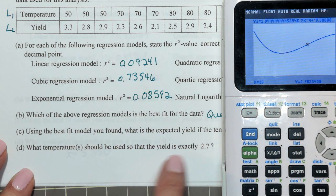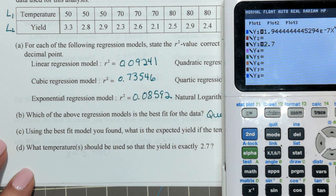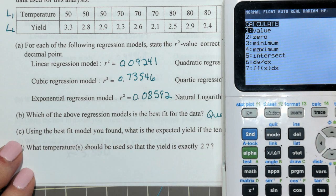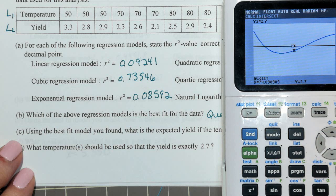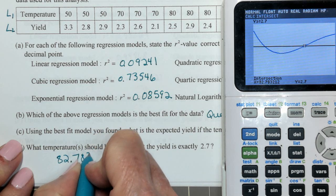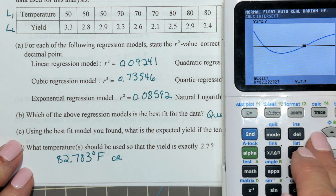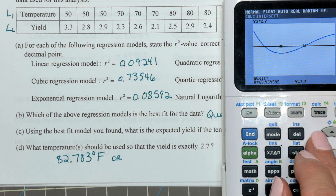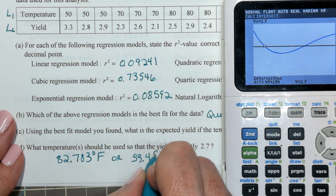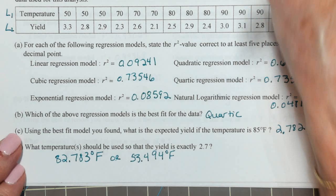What is the temperature when the yield is exactly 2.7? I'm going to go to my Y equals. Go to another Y and put in 2.7. There are two temperatures that yield that. Second calc, 5 for intersect. Enter, enter. I might just go ahead and hit enter again. It's going to get this one. So, the temperature is either 82.783 degrees Fahrenheit or 2nd calc, 5. Enter, enter. And now I'm going to scroll a little bit closer over here. Enter. And it gets me that other one. Or 53.494 degrees Fahrenheit. So that's how you do something like that.